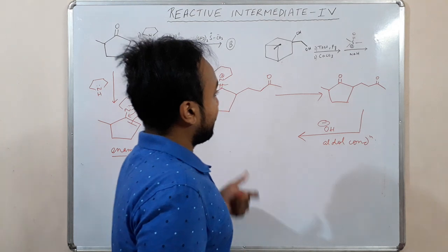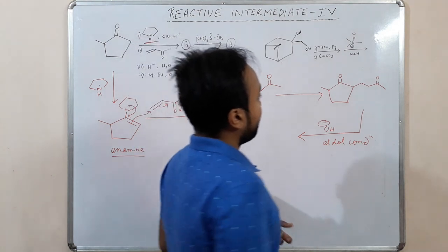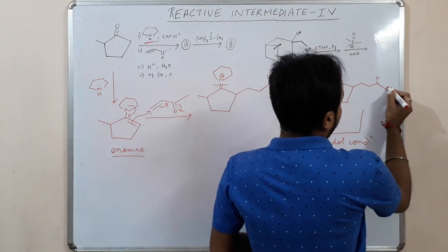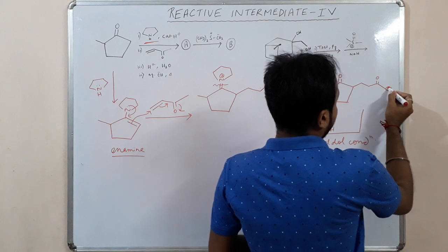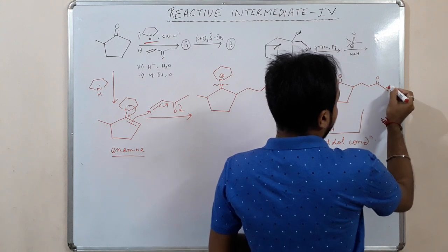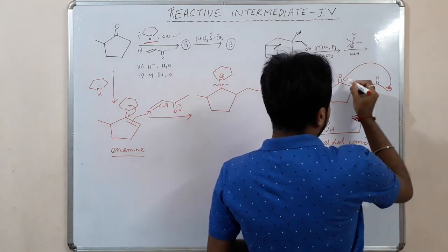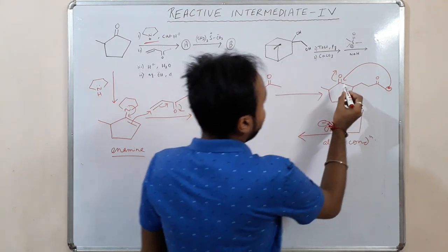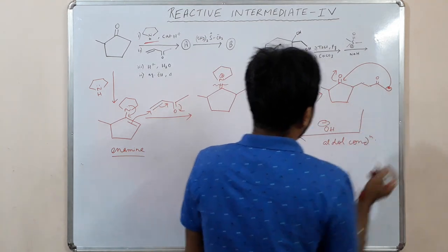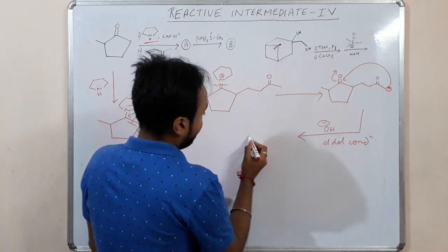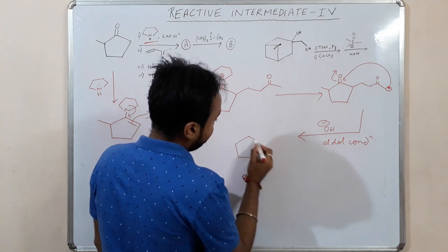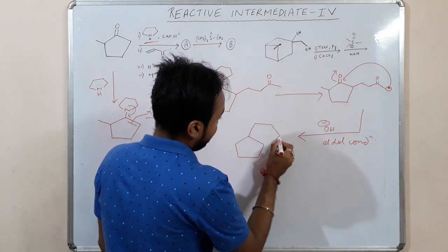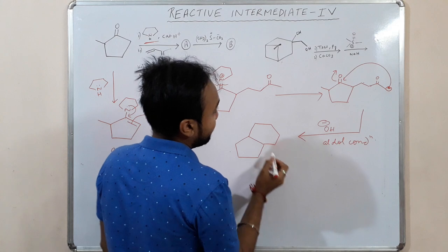From where will it extract the proton? It will extract the proton from here, and this one will attack the carbonyl carbon — forming a 1, 2, 3, 4, 5, 6-membered ring. So we have a 5-membered ring and here we have a 6-membered ring.